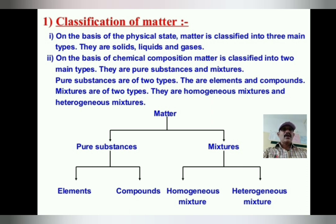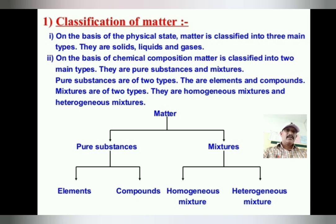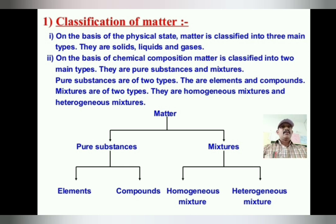You have studied these in the first chapter — the three main types of physical state of matter are solids, liquids, and gas. This is the first classification of matter.